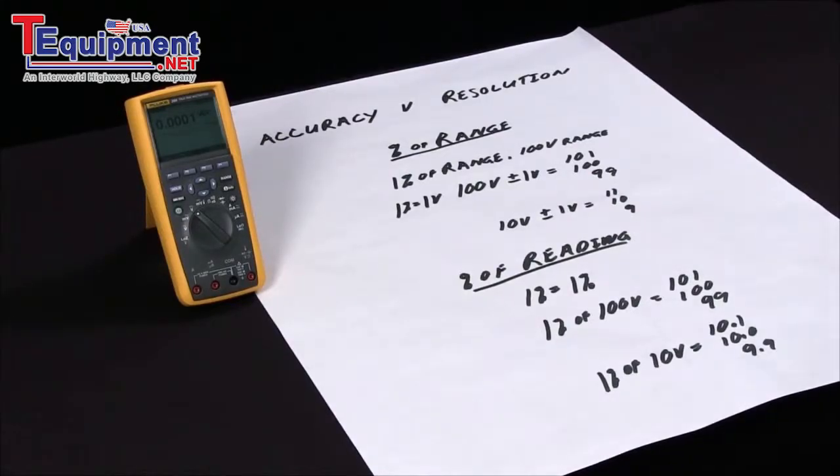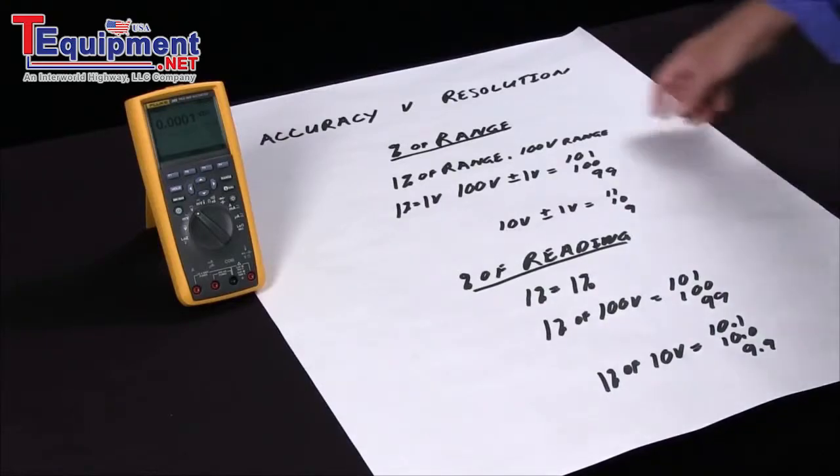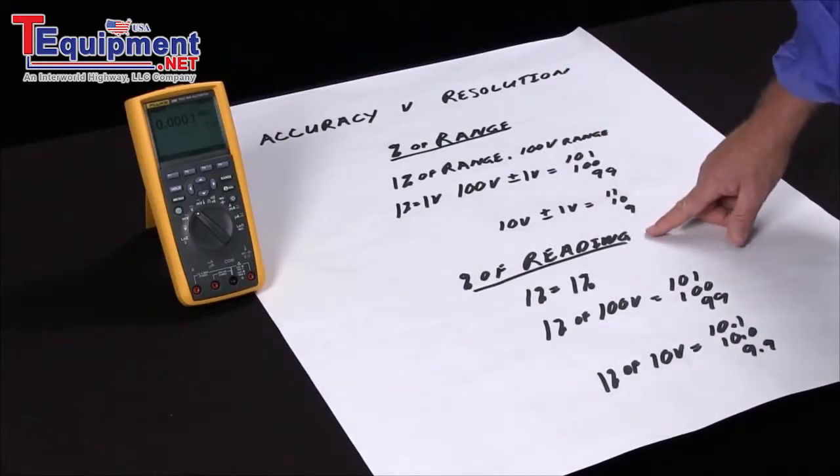So there's two ways we have accuracy specified. One is in percent of range and one is in percent of reading.